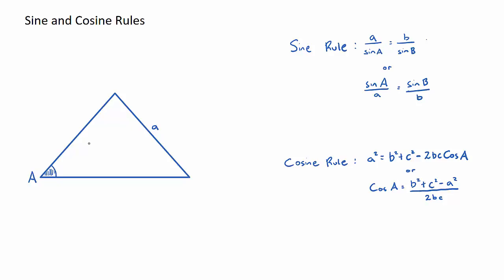Now the capital letter A, the angle, will always be opposite its lowercase counterpart, the lowercase a, which will be the side length from here to here. So it's very important to remember that the lowercase a can't be here or it can't be here. It's always going to be opposite its counterpart capital letter angle.